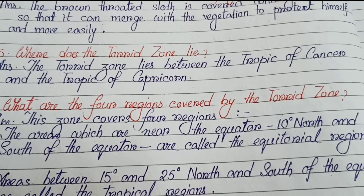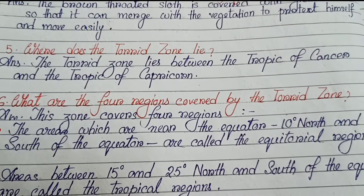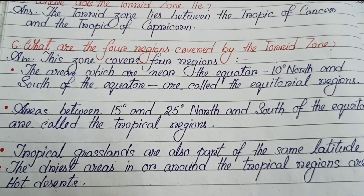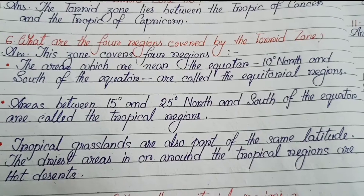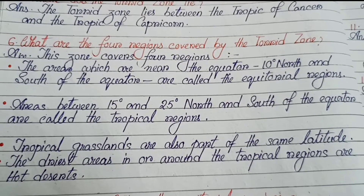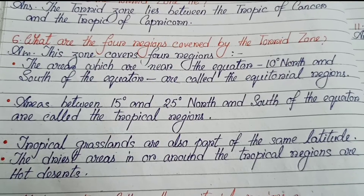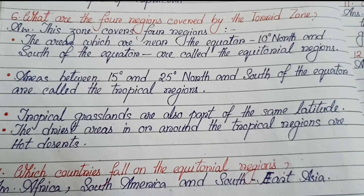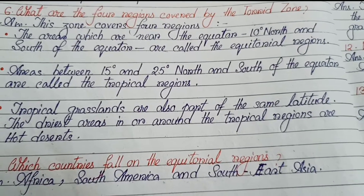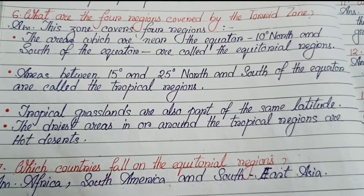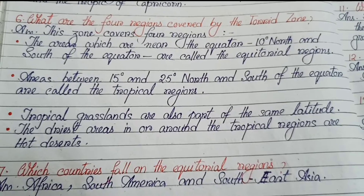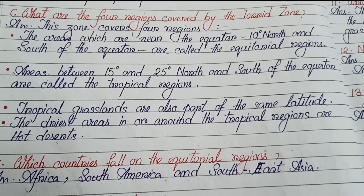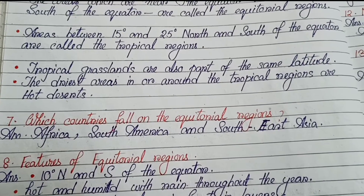Number 5: Where does the torrid zone lie? The torrid zone lies between the Tropic of Cancer and the Tropic of Capricorn. Number 6: What are the four regions covered by the torrid zone? First: areas near the equator, 10 degrees north and south, are called equatorial regions. Second: areas between 15 and 25 degrees north and south are called tropical regions. Third: tropical grasslands are also part of the same latitude. Fourth: the driest areas in or around the tropical regions are hot deserts.